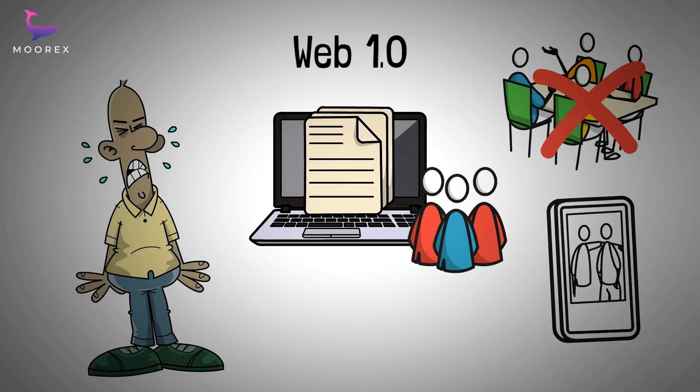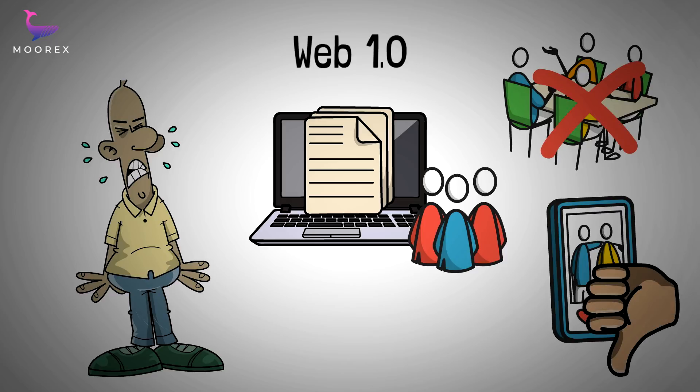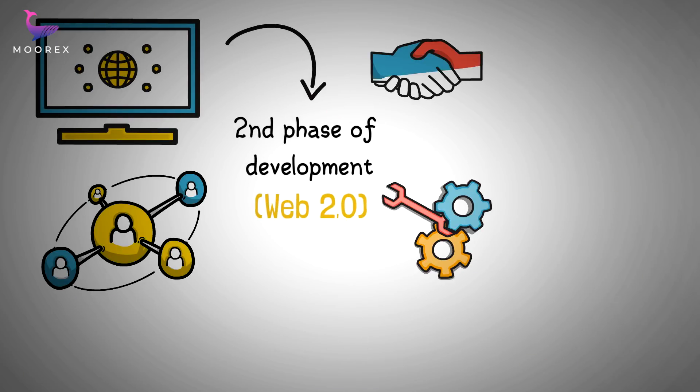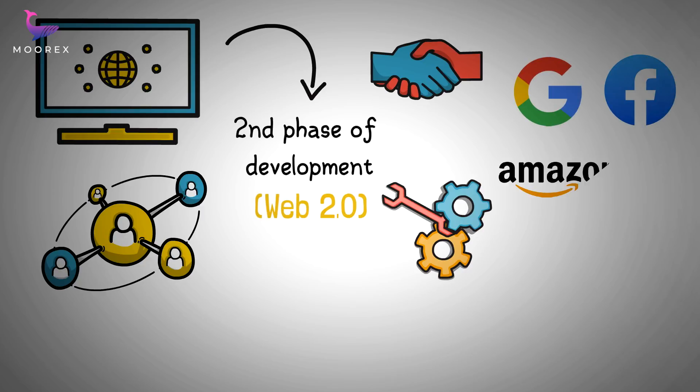Web 2.0 was an upgrade which introduced the social web that we know today, a more interactive system with Google, Facebook, Amazon, Twitter, personal blogs and the likes.